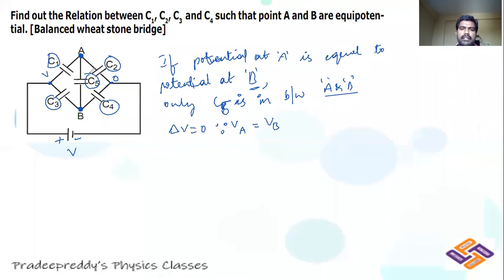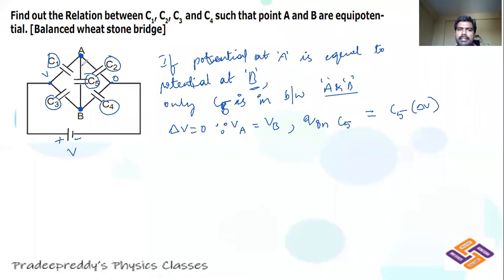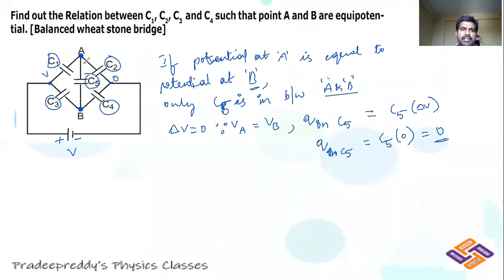If the potential difference across that capacitor is equal to zero, then Q on C5 = C5 × ΔV = C5 × 0 = 0. Therefore, even though capacitor C5 is connected between A and B whose potentials are equal, there is no charge distributed on C5. All charge will be distributed only on C1, C3, C2, C4. So we can simply eliminate C5.